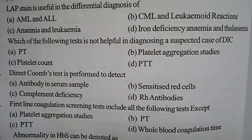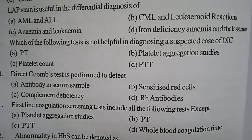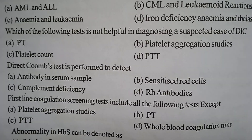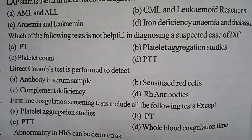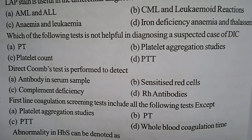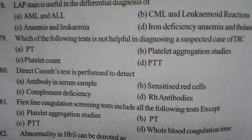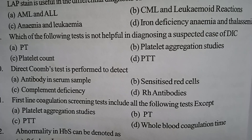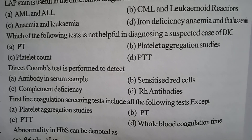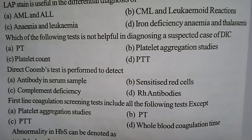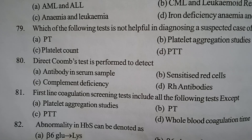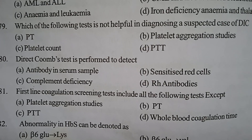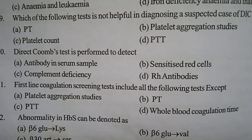Next one: first line coagulation screening tests include all of the following except? Option A: platelet aggregation studies. Option B: PT. Option C: PTT. Option D: whole blood coagulation time. Correct answer: option A, platelet aggregation studies.